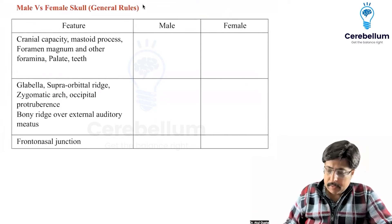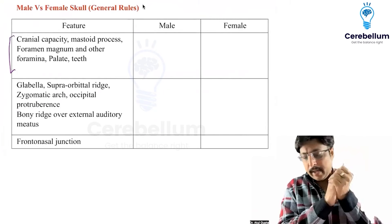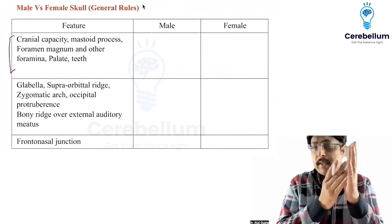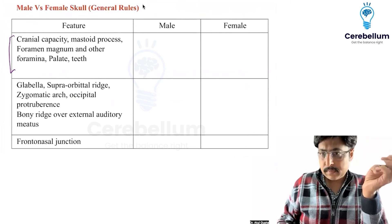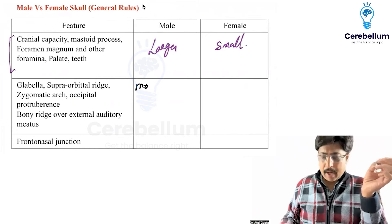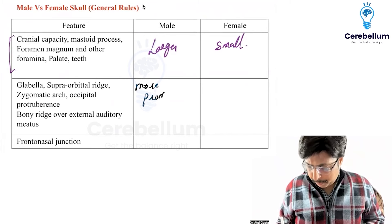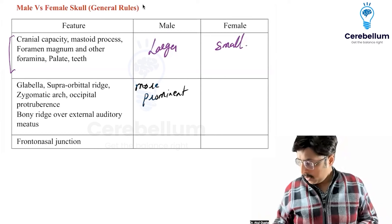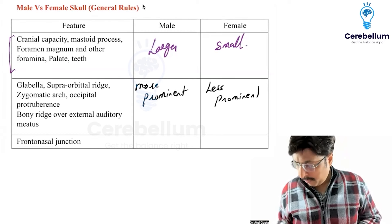Now, male versus female skull features. Most features follow the general rule. Cranial capacity, mastoid process, and foramens will be larger in males and smaller in females. Glabella and supraorbital ridges will be more prominent in males and less prominent in females.